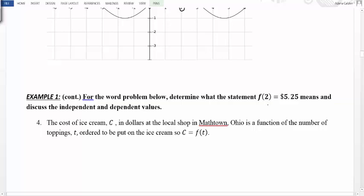So f(2) means that we're plugging a 2 in for t. That means that the number that stands alone is related to the cost. So in this scenario, the 2 is the number of toppings, and the cost is 5.25. This tells me that if I choose two toppings for my ice cream, the total cost will be $5.25. So the output here was 5.25, and the input was 2.